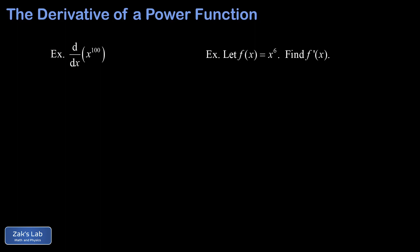Now let's apply the formula with a couple of examples. In Leibniz notation: d/dx of x to the 100th power — using the power rule, bring the exponent down in front, subtract 1, and we get 100 times x to the 99th. In Newton's prime notation: let f(x) equal x to the sixth, then f prime of x equals 6 times x to the fifth. In the next video we'll learn how to take the derivative of a linear combination of two functions — links are posted on the end screen.